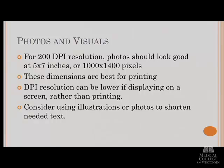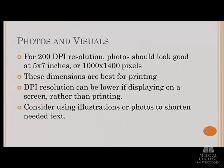Photos and visuals: before you take any pictures, you'll want to set your camera settings appropriately. Some settings are set within the camera, some will be readable within the software itself. Generally speaking, most camera images will be at a resolution suitable for printing, which is 200 dots per inch. Photos should look good sized at about 5 by 7 inches or about 1,000 by 1,400 pixels. If this poster is going to be displayed on a screen only, that DPI resolution can be a little bit lower.